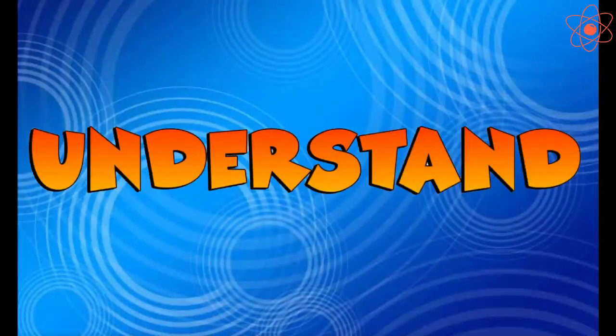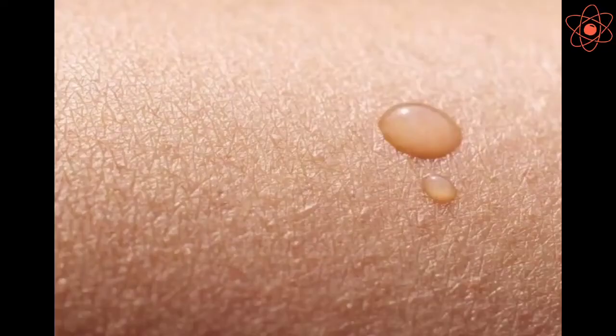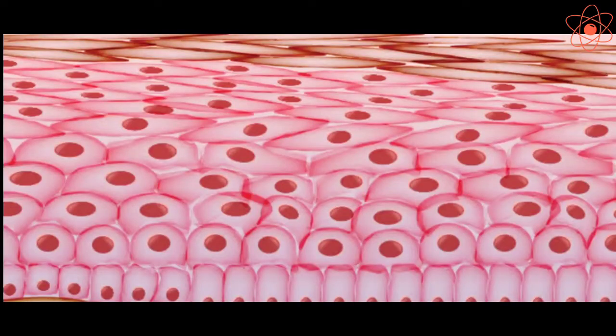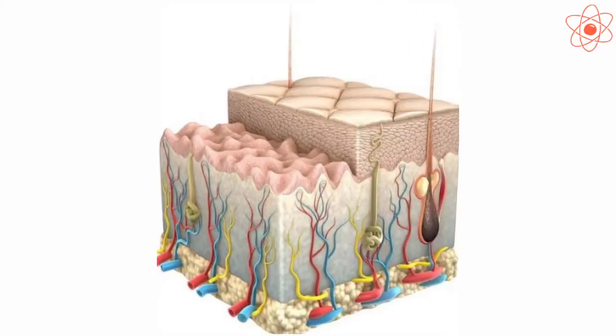Let us understand this with the help of a few examples. Skin has thin, flat and rectangular cells with no intercellular space between them. This shape enables the skin cells to act as a protective covering.